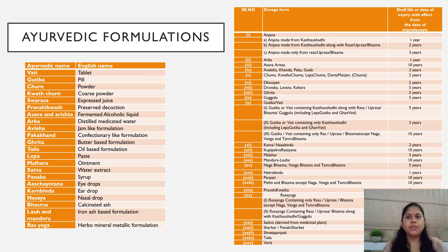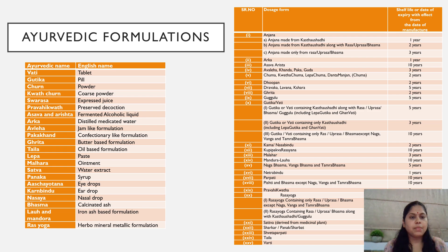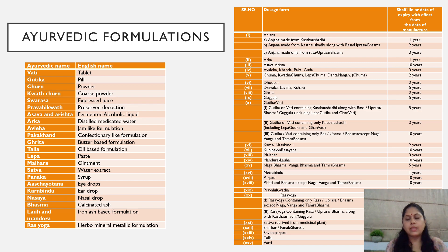Various Ayurvedic formulations and their shelf lives as per the CDSCO Drugs and Cosmetics Act and AYUSH rules include solid, semi-solid, and liquid dosage forms such as Vati, Gutika, Churna, Kvatha, Swarasa, Arka, Avaleha, Lepa, Malahar, Den, Satva, and Panaka, along with their expected shelf lives.